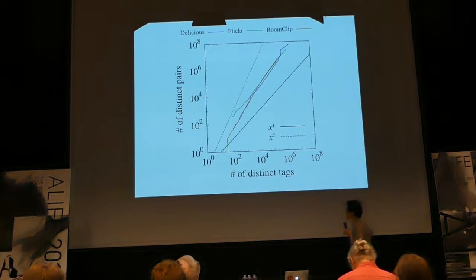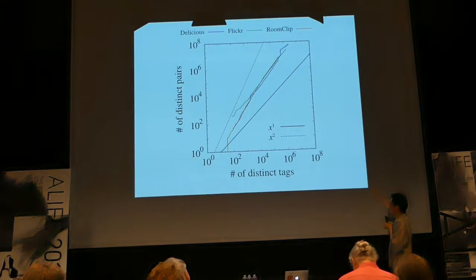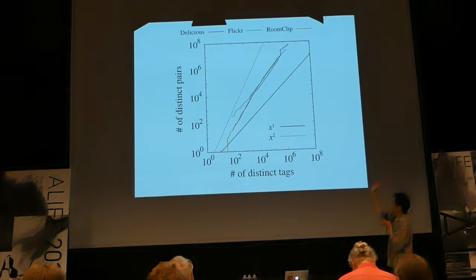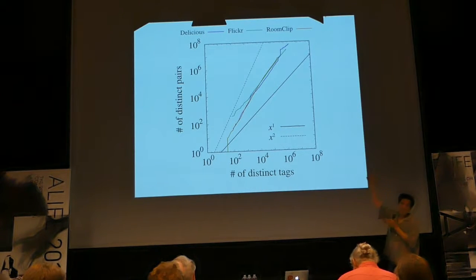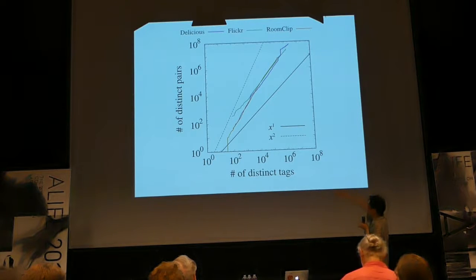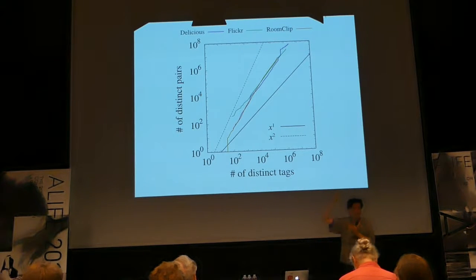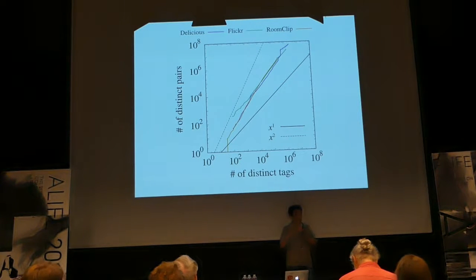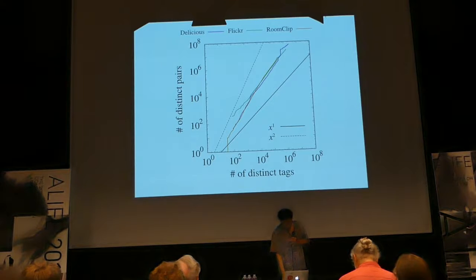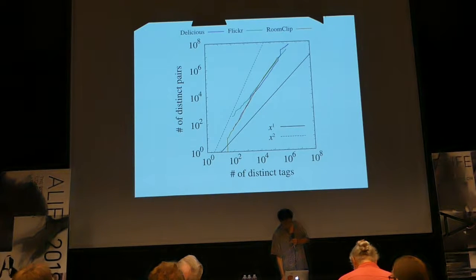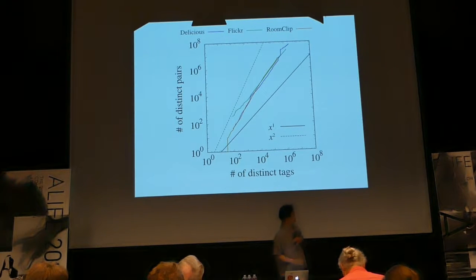We checked: the horizontal axis is number of distinct tags, and the vertical axis is number of distinct pairs. It should be proportional to the number of distinct tags, with the maximum being m-squared. Actually, the number of distinct pairs is not just proportional to distinct tags — it has a different exponent. It's in between. Flickr and Roomclips also have the same exponent, so there should be some sort of universal exponent, though we don't yet understand why this exponent emerges.